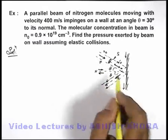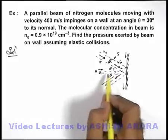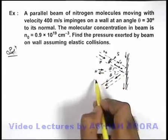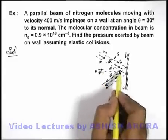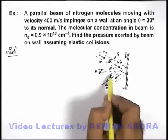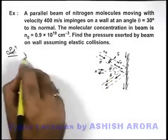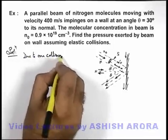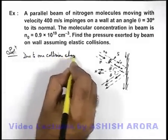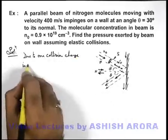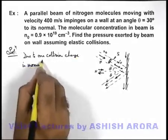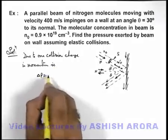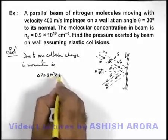So in this situation we can state the momentum which is normal to the direction of wall will be changed in such a way that the direction is exactly opposite. So we can say due to one collision, change in momentum is Δp we can write as 2m'v cos θ.